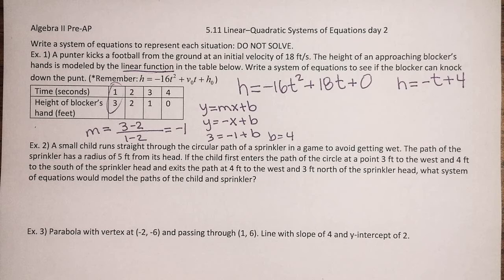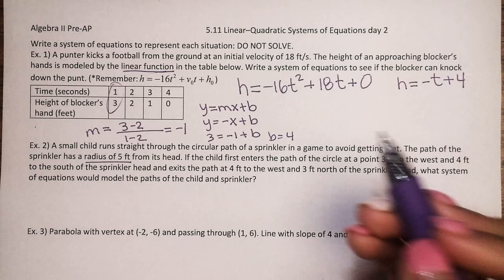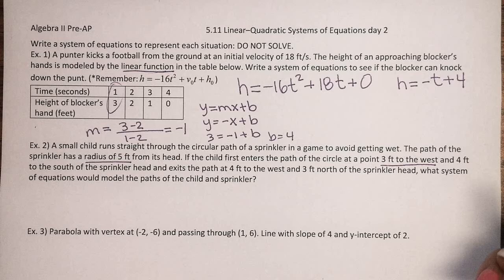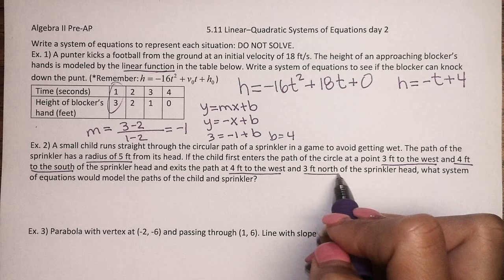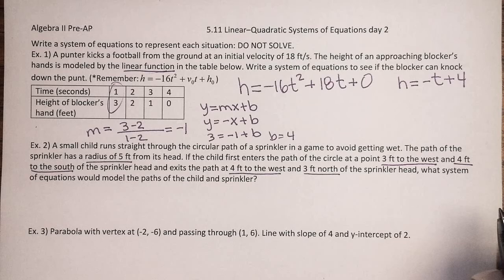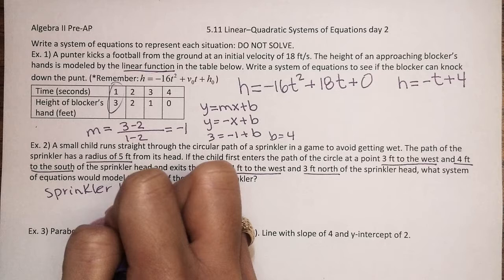So let's try number 2. A small child runs straight through the circular path of a sprinkler in a game to avoid getting wet. The path of the sprinkler has a radius of 5 feet from its head. If the child first enters the path of the circle at a point 3 feet west and 4 feet south of the sprinkler head, and then exits the path at 4 feet west and 3 feet north of the sprinkler head, what system of equations would model the path of the child and the sprinkler? So we can let the sprinkler head be located at 0, 0 at the origin.